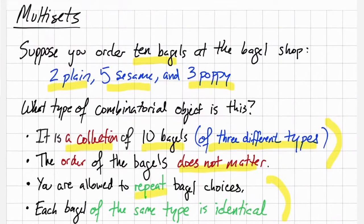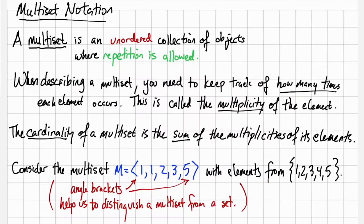A precise definition would be a multiset is an unordered collection of objects where repetition is allowed. When you're describing a multiset, it's important to keep track of how many times each element occurs. This is called the multiplicity of the element. When we add together the multiplicities of all the elements, that is called the cardinality of the multiset.